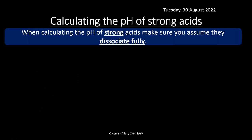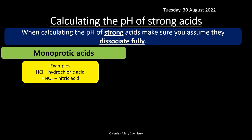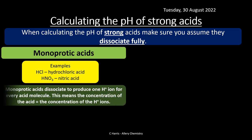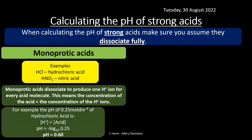Let's look at calculating the pH of these strong acids. When calculating the pH of strong acids, we assume they dissociate fully. For monoprotic acids such as HCl or HNO₃, they produce one H+ ion per acid molecule, so the concentration of the acid equals the concentration of H+ ions. For example, for the pH of 0.25 mol dm⁻³ of hydrochloric acid, [H+] = [acid], so we put that into the pH equation and get a pH of 0.6.